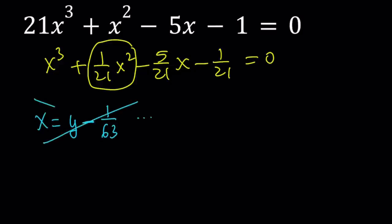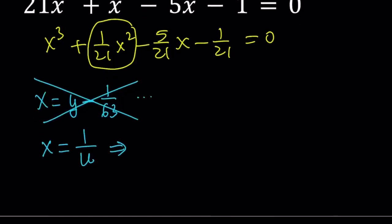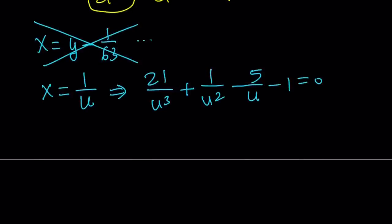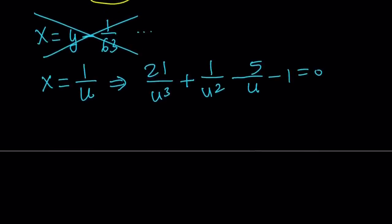So I would like to replace x with something like 1 over u. I'm pretty sure one of you, at least, will think about this idea. So x equals 1 over u gives us the following. It's actually going to reverse everything. So we're going to get 21 over u cubed plus 1 over u squared minus 5 over u minus 1 equals 0. The good thing about this is that the constant is not going to change because it is a constant.